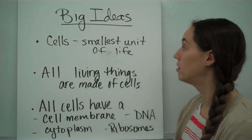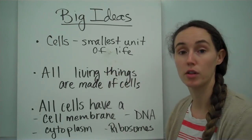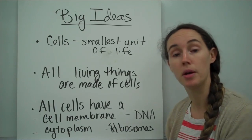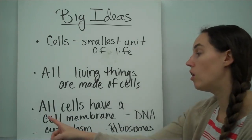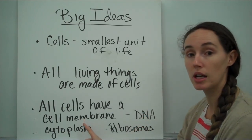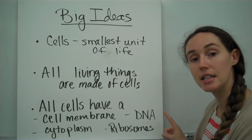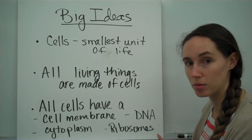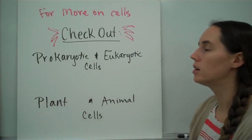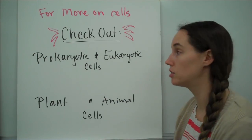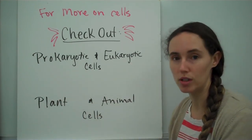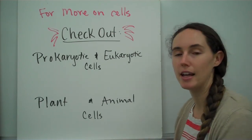So the big ideas from here are that cells are the smallest unit of life. All living things are made of cells — some may be made of one, some may be made of many. And all cells, no matter what kingdom they come from, have a cell membrane, cytoplasm, DNA, and ribosomes. For more about cells and the different kinds of cells, check out the podcast on prokaryotic and eukaryotic cells, as well as the podcast on plant and animal cells.